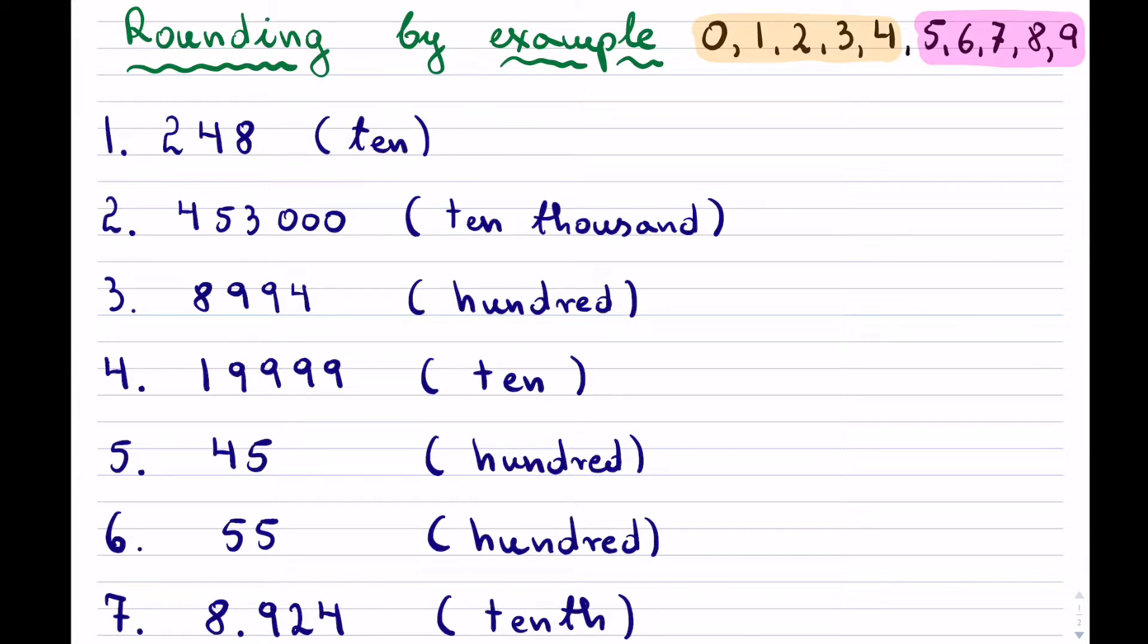The way that rounding works: if the digit is between 0 and 4, we do not change anything. When it is between 5 and 9, we add 1 up. I will show that by example, and hopefully by seeing all of these examples, you will have a better idea on how to round.